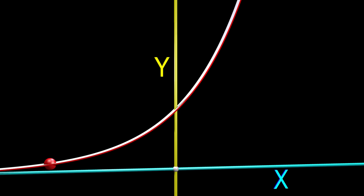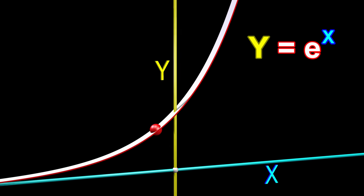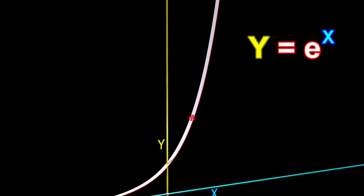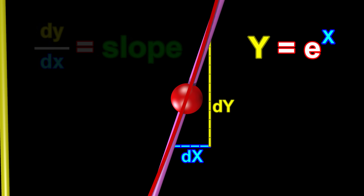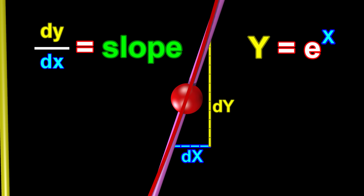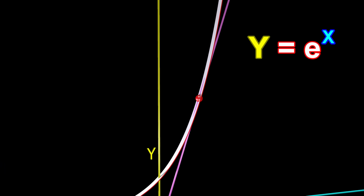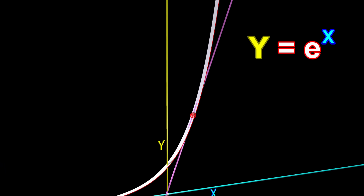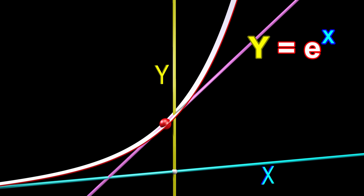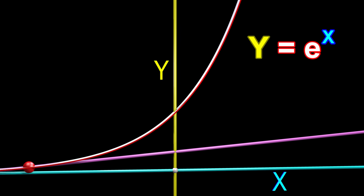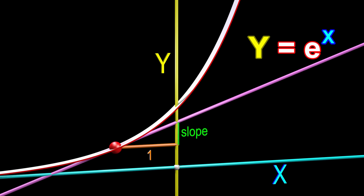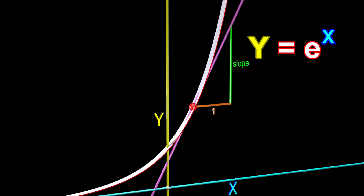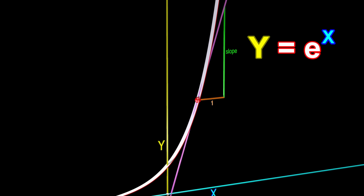Consider the function y equals e raised to the power of x. This function has a very special property. To understand this property, consider the line tangent to this curve. Now consider the slope of this line. At every point along this curve, the value of the slope is exactly equal to the value of y at that point.